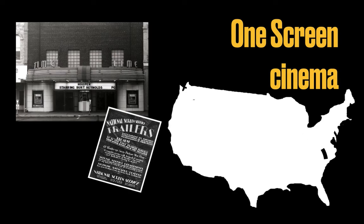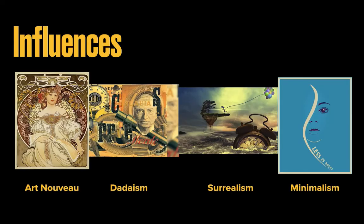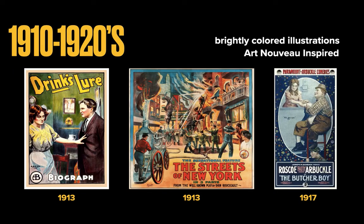Movie posters were heavily influenced by art movements such as Art Nouveau, Dadaism, Surrealism, and Minimalism. During 1910 to 1920, we see Art Nouveau in movie posters — brightly colored illustrations taken from the style of Edward Penfield, known as the father of the American poster, and William H. Bradley, the highest-paid illustrator in the early 20th century. Some posters from this period include movies like 'Drink,' 'Lure,' 'The Streets of New York,' and 'The Butcher Boy.' Much of the artists' identity is unknown, as they were mostly anonymous.